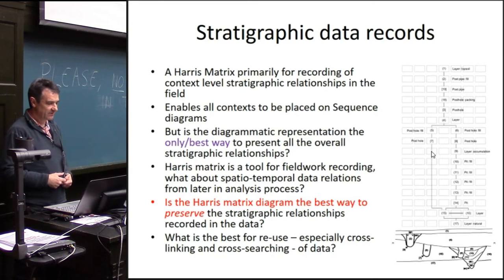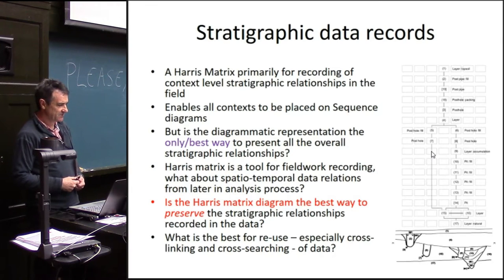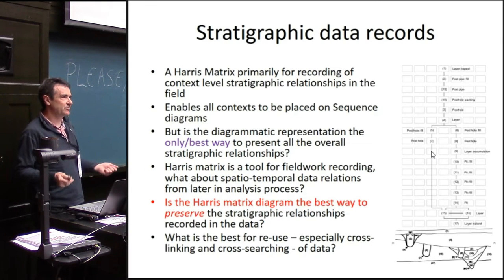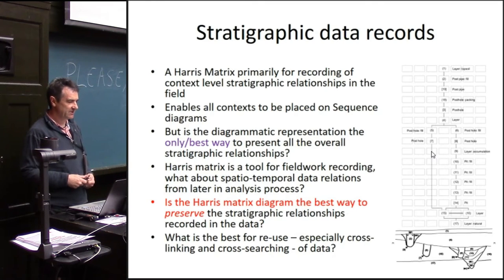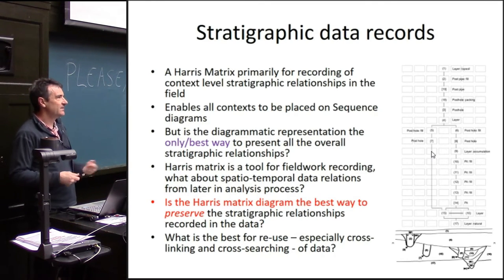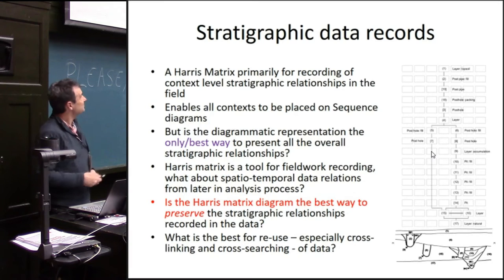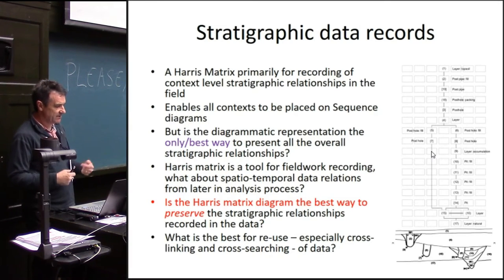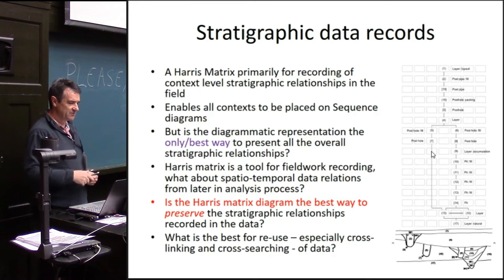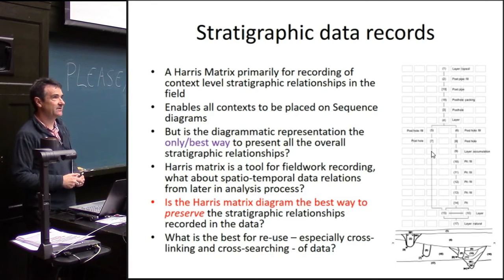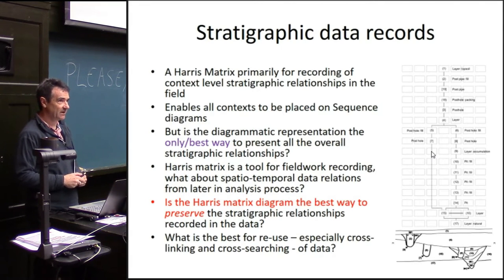Going back to basic principles, I'm looking again at a review of Harris's work on relationships. The Harris Matrix was primarily developed for recording stratigraphic relationships in the field. The principle behind it, as we see in the diagram on the right, is to enable a sequencing of individual layers, deposits, or items of stratigraphy in archaeology — and very much about the relationships between those items of archaeological information.